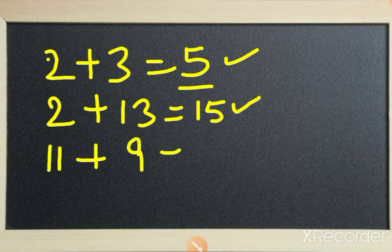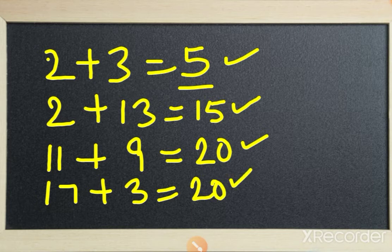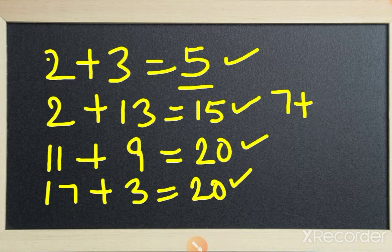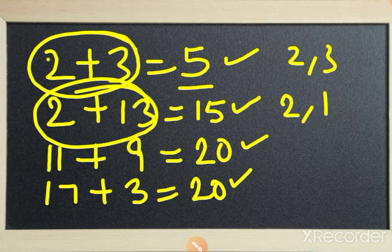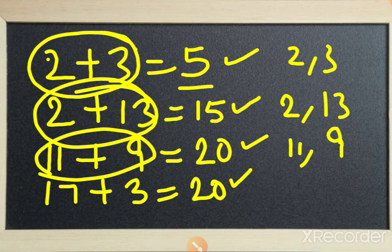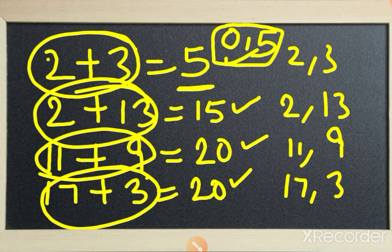11 plus 9 equals 20 — this is also in the table of 5. 17 plus 3 equals 20. 7 plus 13 equals 20. Also, 2 plus 13 equals 15 — this is also divisible by 5. Numbers divisible by 5 are those that end in 0 or 5.